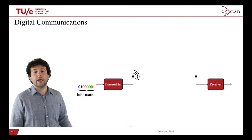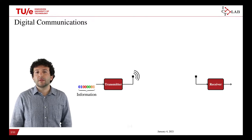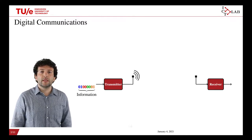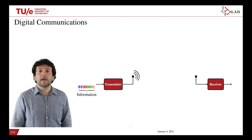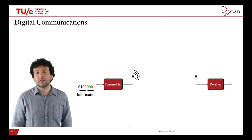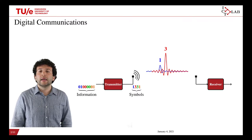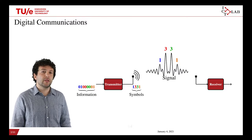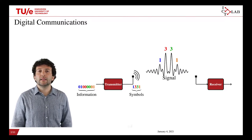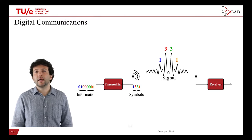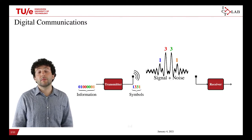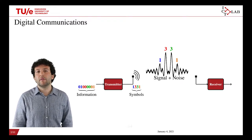A digital communication system consists of a transmitter and a receiver. The function of the transmitter is to convert the binary information to be transmitted into a sequence of digital symbols. These digital symbols are then used to modulate analog pulses in a sequential manner until they are added up to obtain an analog waveform — the signal. This signal is then transmitted to the receiver, where a possibly distorted and noisy version is received, and the inverse operations are implemented.